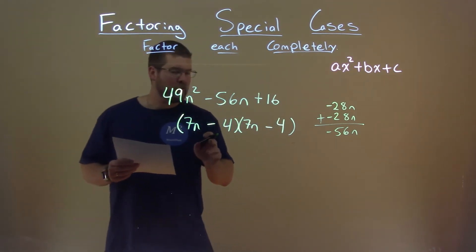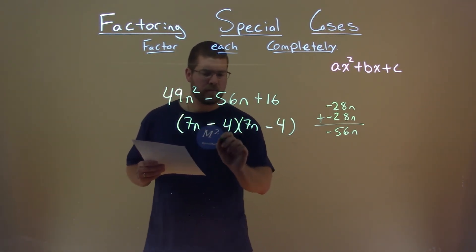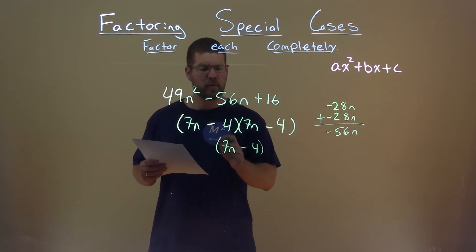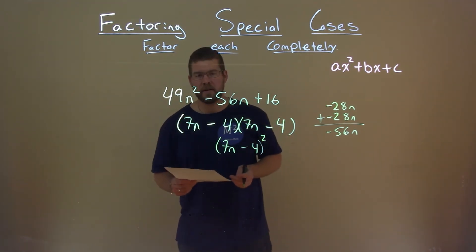So we almost have our answer, but notice these two are exactly the same now. We have 7n minus 4 and 7n minus 4. They're being multiplied. So we can write it as 7n minus 4 all squared, and that is our final answer.